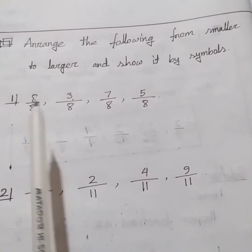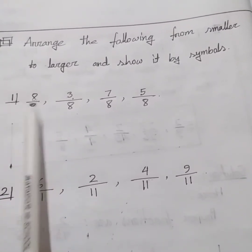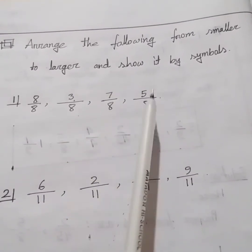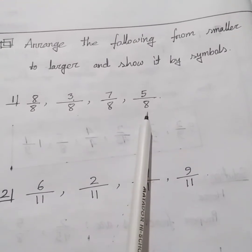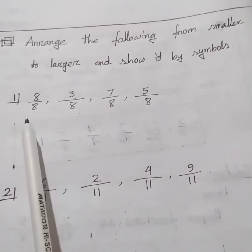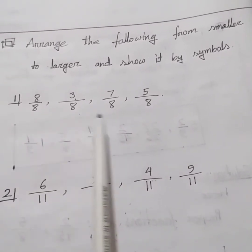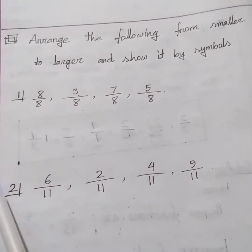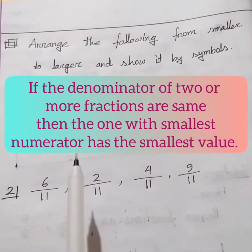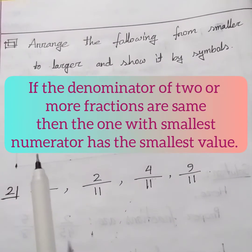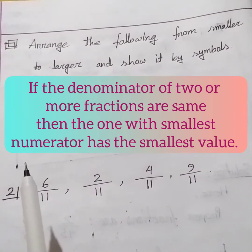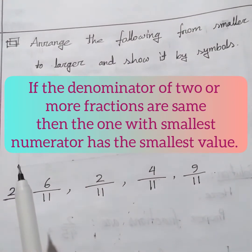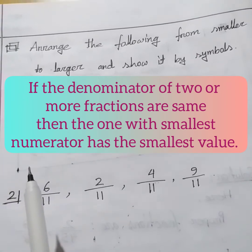Here we have four fractions: 8 over 8, 3 over 8, 7 over 8, and 5 over 8. Did you notice here all the denominators are the same? You know that if the denominators of two or more fractions are the same, then the one with the smallest numerator has the smallest value.